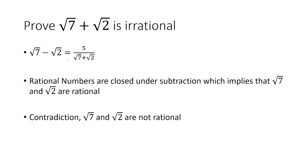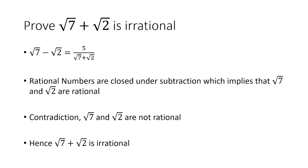But that's where the contradiction happens. We know that the square root of 7 and square root of 2 are not rational. So our assumption was incorrect. The assumption was that the square root of 7 plus the square root of 2 is rational, but in fact it's irrational. And that completes the proof.